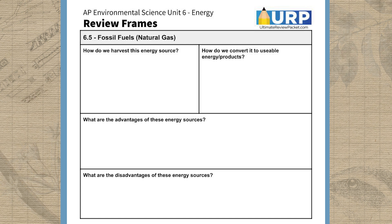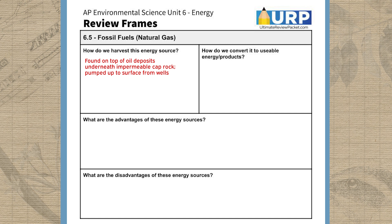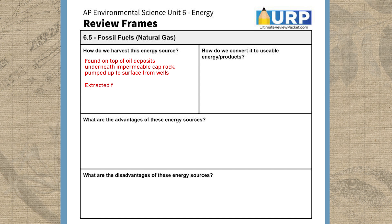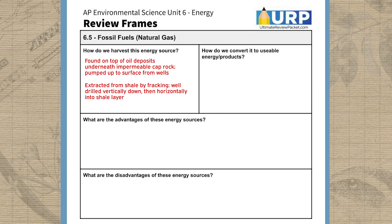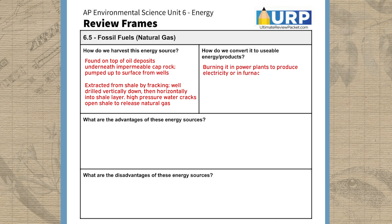Let's run through an example of how to use this Unit 6 frame to review what we've learned about natural gas. In terms of how we use it, first we need to remember that it's often found on top of existing oil deposits, trapped underneath an impermeable cap rock, and that we can extract it by drilling through the cap rock and piping it up to the surface. We can also extract it from sedimentary rock formations like shale through fracking. This involves drilling a well down into the ground and then horizontally into the shale layer, making small cracks in it with water pumped in at extremely high pressure. Once we've harvested the natural gas, two of its biggest uses are burning it in a power plant to produce electricity and burning it in furnaces to heat buildings.